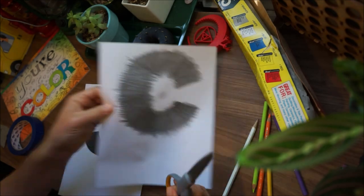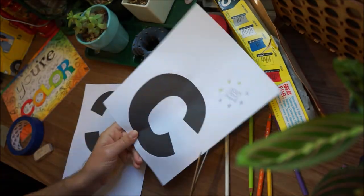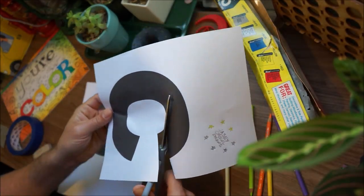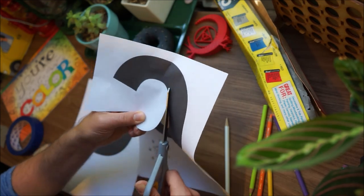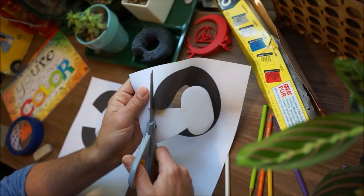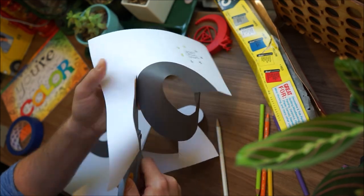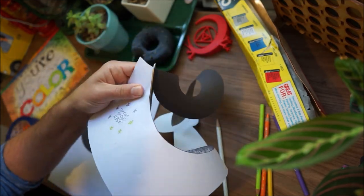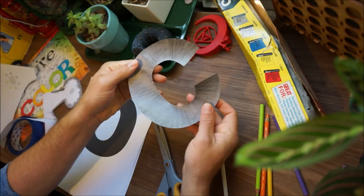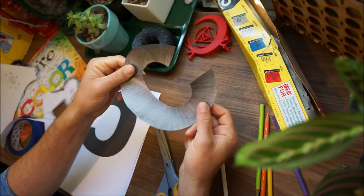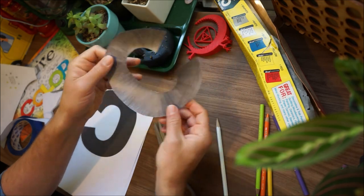Once we have our carbon paper created for our letter C, we're going to cut it out. So carefully, get those scissors and ask permission to cut out this piece of paper. Get some help if you need it. We are going to cut right along the very edge of our letter. Try to cut it out as perfectly as possible. Take your time with this. And then you have your very own piece of transfer paper, your carbon copy C.